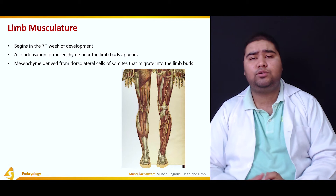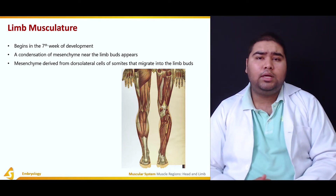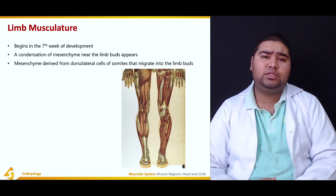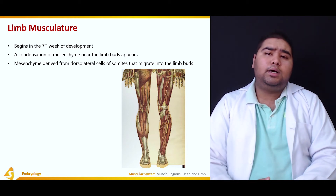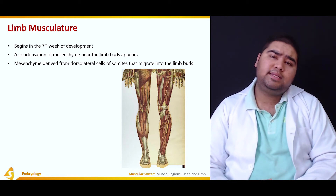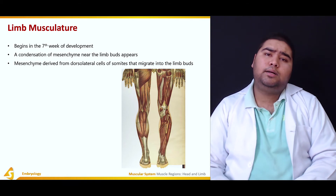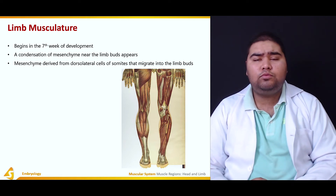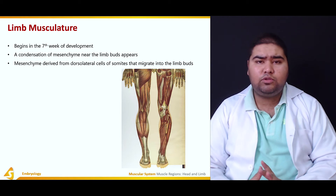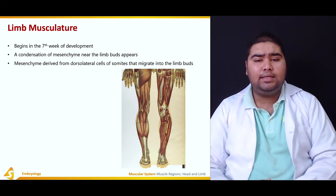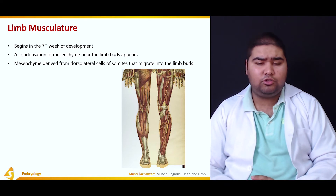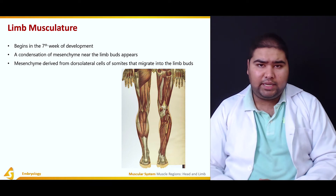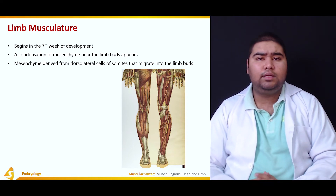A somite is divided into a ventral and a dorsal portion. The ventral portion lies towards the abdominal wall, and the dorsal portion lies towards the vertebral column. The ventral portion forms the sclerotome and the dorsal portion forms the dermatome. The myotome is formed in between the dorsal and ventral portions, and cells from the dorsolateral myotome migrate towards the mesenchymal bud formed in front of the limb bud.